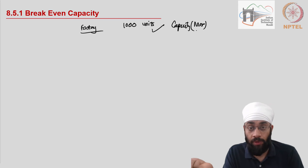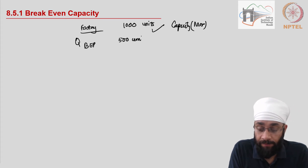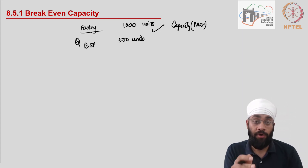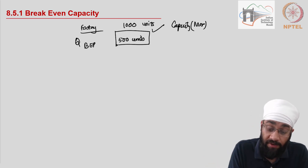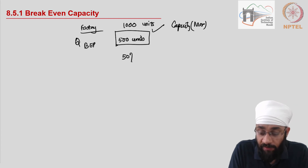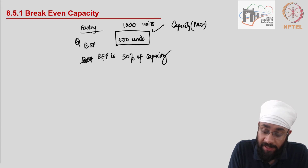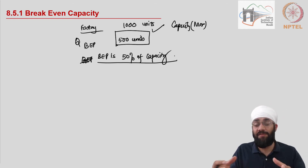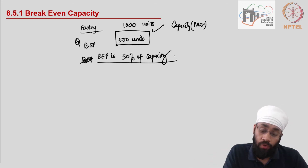Imagine your break-even quantity is 500 units. In order to break even — to reach the point beyond which you start making profit — you have to produce 500 units, which means 50% of the operating capacity. So the break-even point is 50% of capacity, meaning there is another 50% capacity available for you to now make profit and continue making profit.